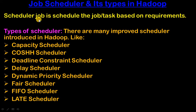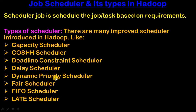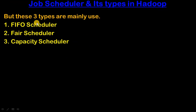Hadoop can then execute those jobs based on priority. The job scheduler schedules jobs based on requirement. There are many types of job schedulers introduced in Hadoop: first is Capacity Scheduler, second is Coarse Scheduler, third is Deadline Constraint Scheduler, fourth is Daily Scheduler, fifth is Dynamic Priority Scheduler, sixth is Fair Scheduler, seventh is FIFO Scheduler, and eighth is Late Scheduler.